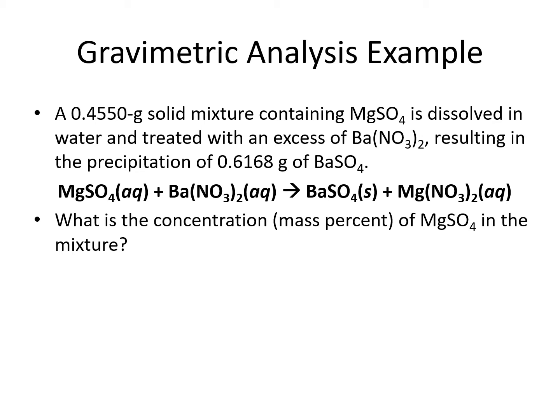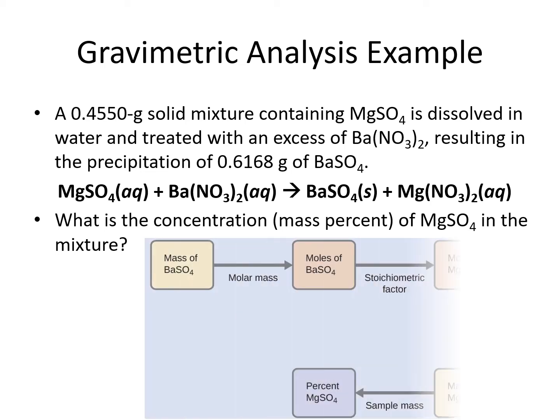The question is: what is the concentration in mass percent of magnesium sulfate in the mixture? Here's our plan. First we go from the mass of the product, barium sulfate, to moles using its molar mass. That would be a gram-to-mole conversion.